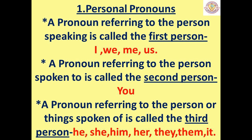First, the personal pronouns. A pronoun referring to the person speaking is called the first person. They are: I, we, me, us. A pronoun referring to the person spoken to is called the second person, that is: you. A pronoun referring to the person or things spoken of is called the third person. Examples: he, she, him, her, they, them, it.